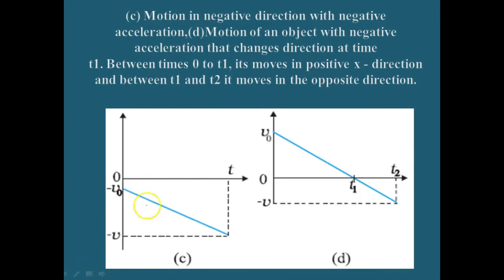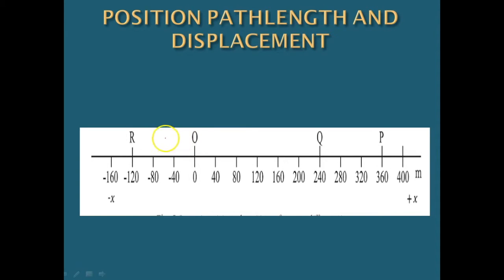The third case: an object is moving in negative direction with negative acceleration. For example, the motion of a car moving from point O in the negative x direction with increasing speed — this is an example of an object moving in negative direction with negative acceleration.